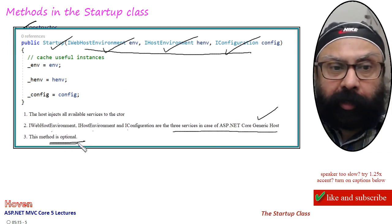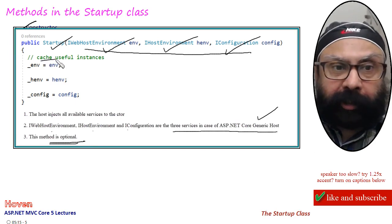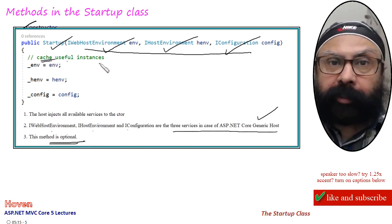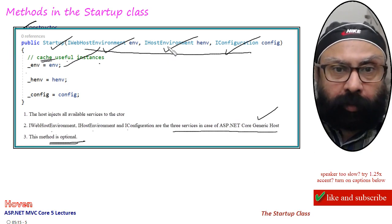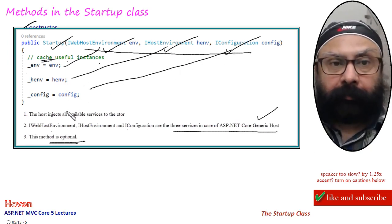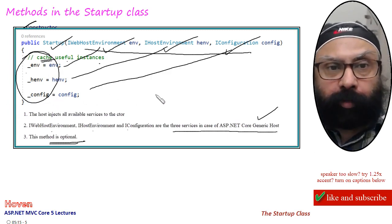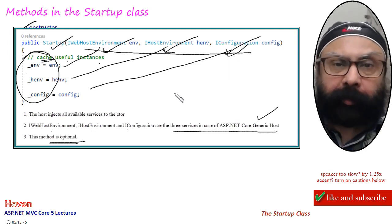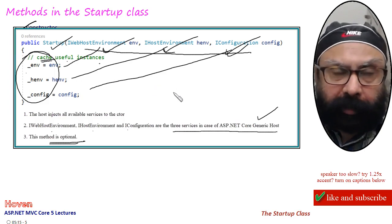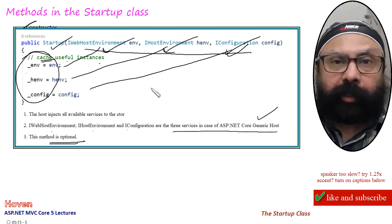This constructor method is entirely optional. The purpose is basically to cache useful instances — make a read-only private member to store these instances. These instances can then be used in the other two methods of the startup class as needed. You can actually obtain them there also by calling various methods, but if you want, you can cache them here by using the constructor.